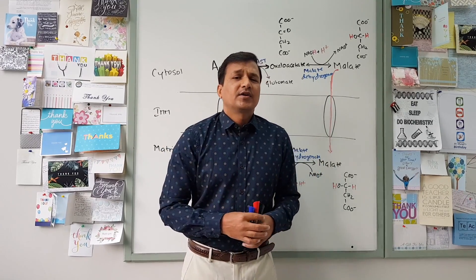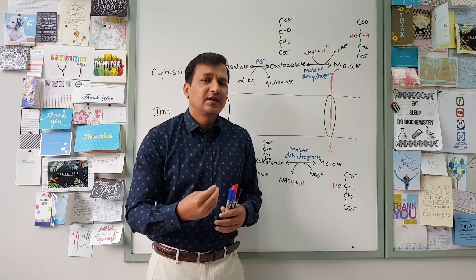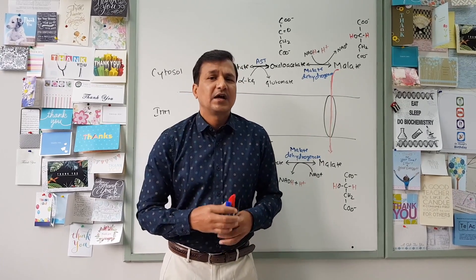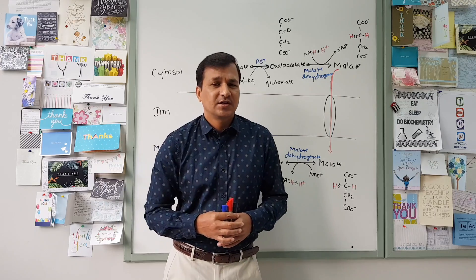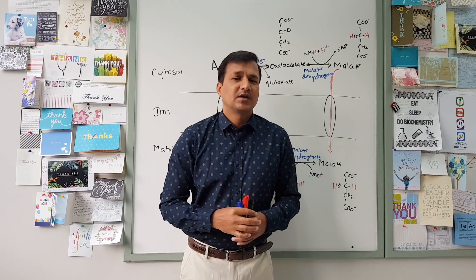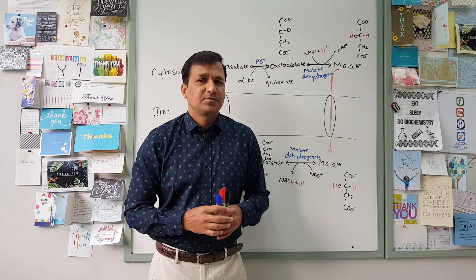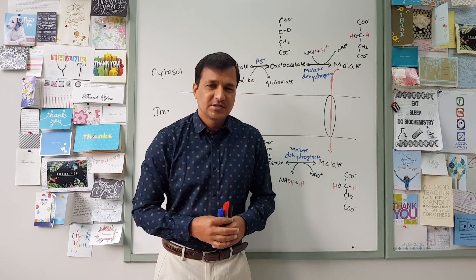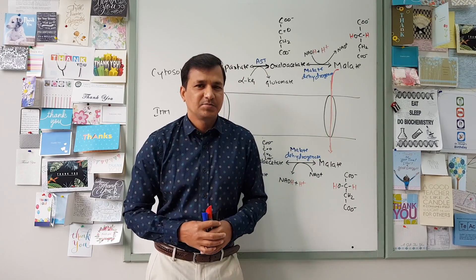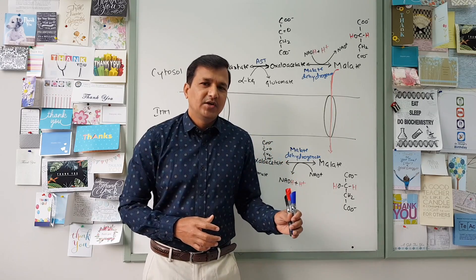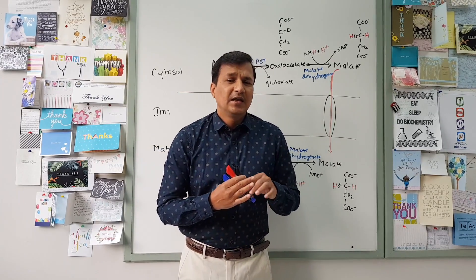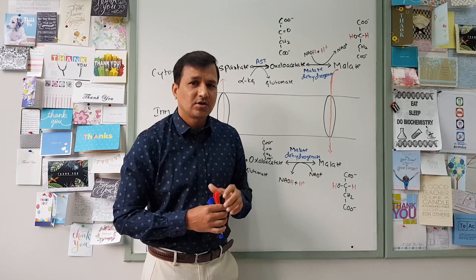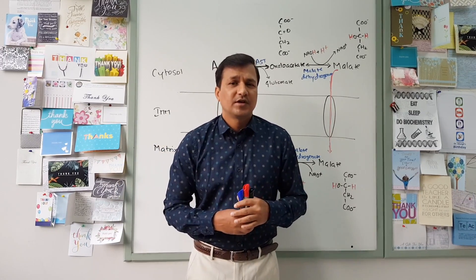There is an alternative, indirect route: you can transport H and H+ present in NADH+H+ into the mitochondrial matrix, and that indirect mechanism is a shuttle mechanism. There are two shuttle mechanisms — the glycerol-3-phosphate shuttle mechanism and the malate-aspartate shuttle mechanism. I have made a video on glycerol-3-phosphate shuttle mechanism; the link is in the description below and also appearing in the upper right corner.